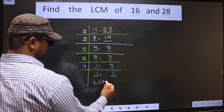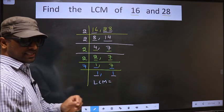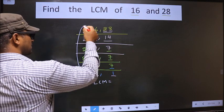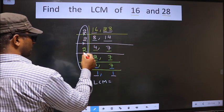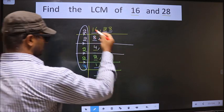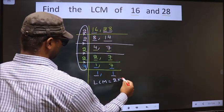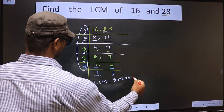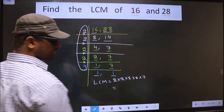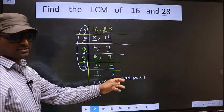So our LCM is the product of these numbers. That is 2 into 2 into 2 into 2 into 7. Now let us multiply these numbers.